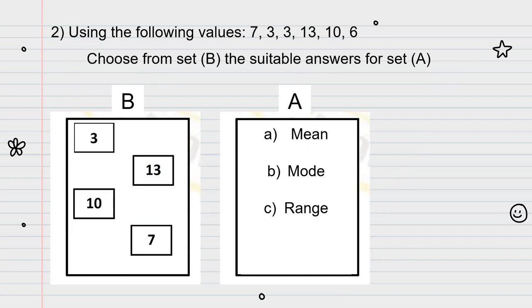Let's see question number 2. Question number 2 here is using the following values: 7, 3, 3, 13, 10, and 6. Choose from set B the suitable answer for set A. I have here these 3 answers, and here I have the thing which I want to calculate.